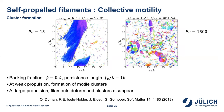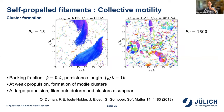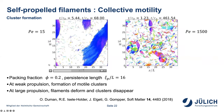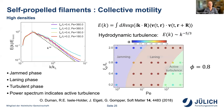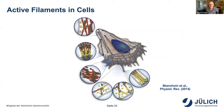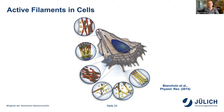Now for the second part: active particles in cells and near membranes. As a reminder from a review by Blanchon in 2014, cells are believed to move due to actin polymerization and motor proteins. There are many active filaments inside a membrane shell, and they lead to propulsion and motion of the cell.